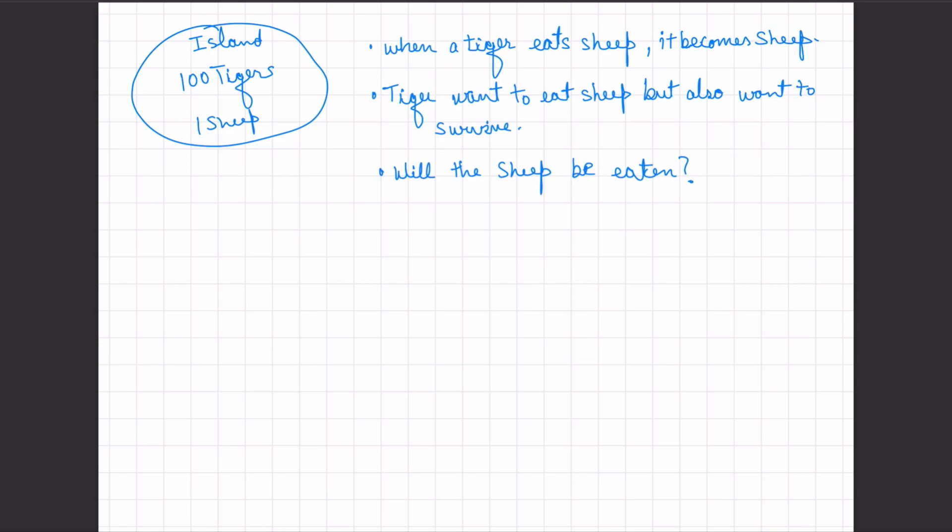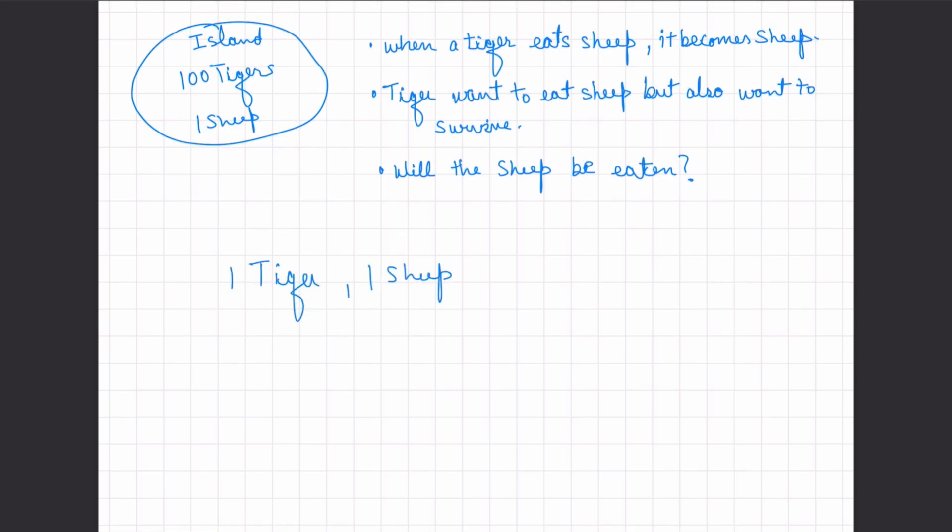Let's try to understand this with a case of just one tiger and one sheep. So in this case, it's fairly simple. There's a tiger, there's a sheep, and tiger would want to eat the sheep. Why? Because once the tiger eats the sheep, it becomes sheep itself. So there's one sheep.